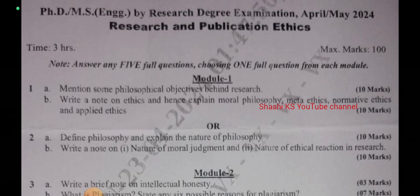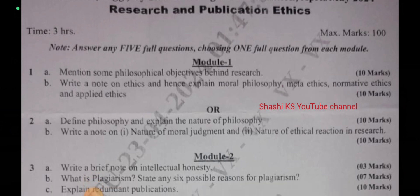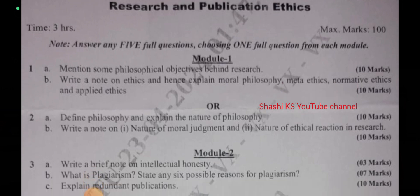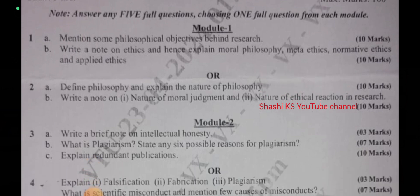In Module 2, question 3a: write a brief note on intellectual honesty — asked for 3 marks. Question 3b: what is plagiarism? State any six possible reasons for plagiarism — asked for 7 marks. Question 4a: explain redundant publications — asked for 10 marks. The or-choice: explain falsification, fabrication, and plagiarism — asked for 3 marks.